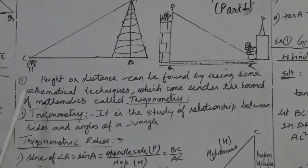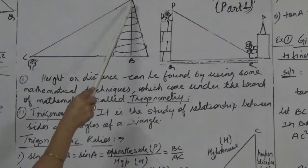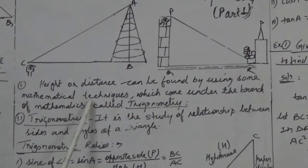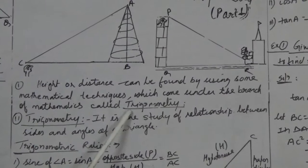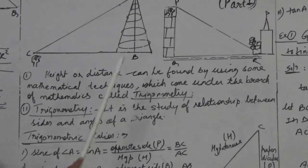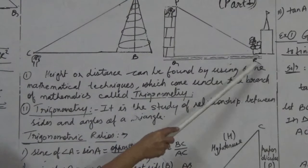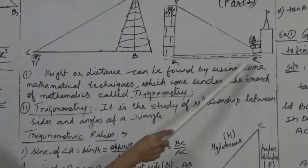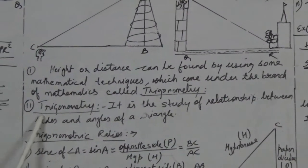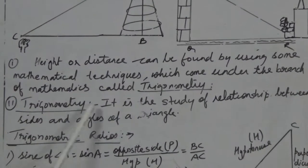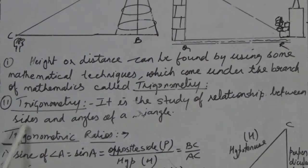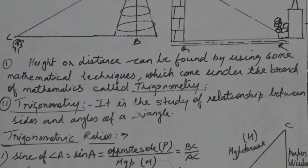So we can find the height here — the boy can find the height of the minar by using mathematical techniques which come under the branch of mathematics called trigonometry. The girl can also find the width of the river by using trigonometry. The definition of trigonometry: it is the study of relationship between sides and angles of a triangle.